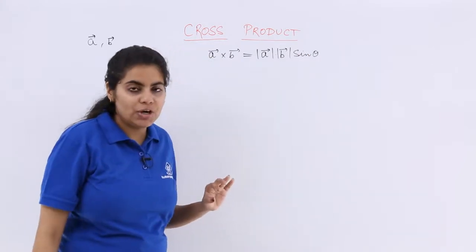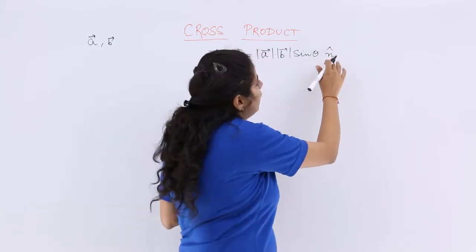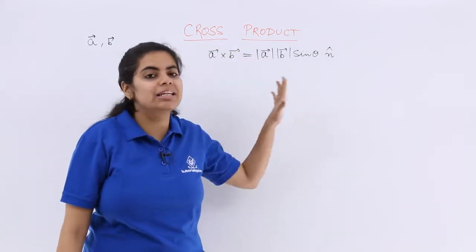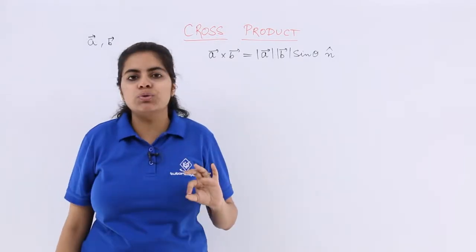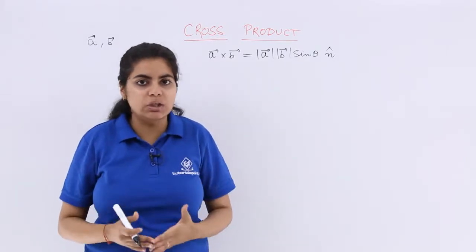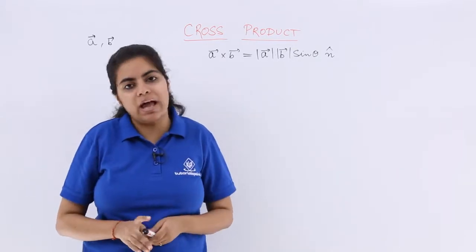So this time it is not cos theta but it is sine theta and you can also have one unit vector n cap associated to the system. So if a cross b I have to compute, then it is the product of the magnitudes of a vector and b vector and the sine of angle between them.